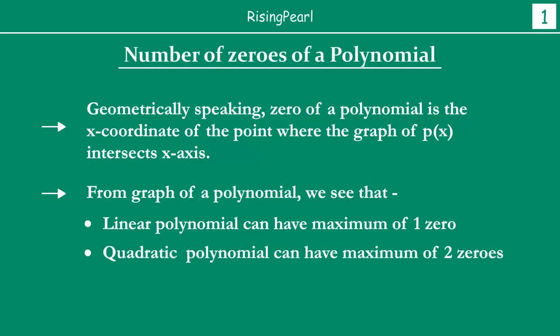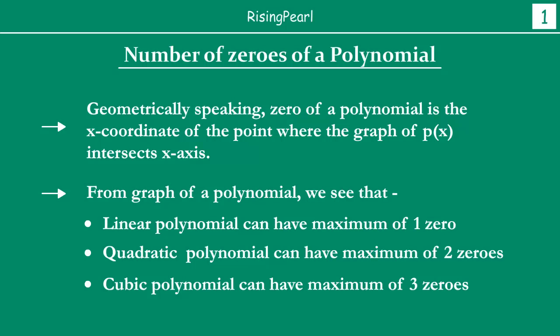Similarly, a quadratic polynomial can have a maximum of two zeros — that is, it can have zero zeros, one zero, or two zeros. And a cubic polynomial can have a maximum of three zeros. In other words, whatever is the degree of the polynomial, it can have at most that many zeros.